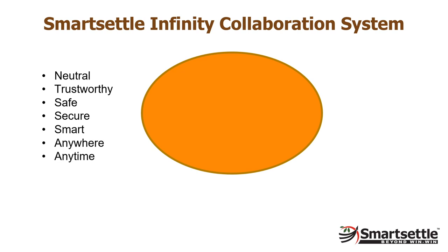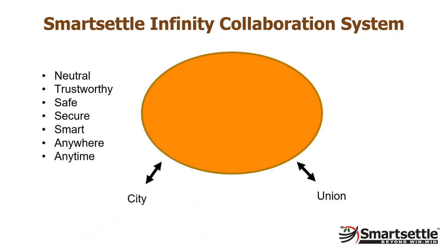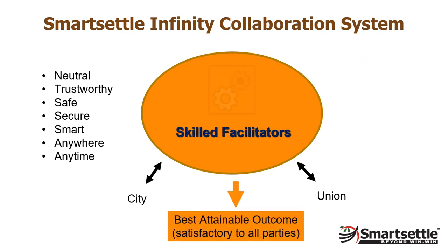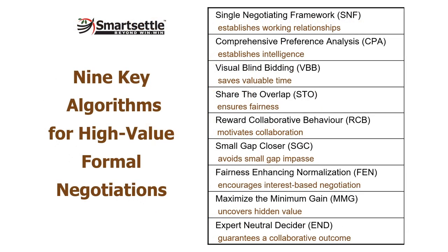The system can accommodate any number of parties, but this example will show only two parties: the City of Metropolis and a union called METO. The parties can be trained to operate the system themselves, but skilled facilitators are often employed to ensure that Infinity delivers the best attainable outcome for all parties. At the core of the neutral site are nine key algorithms designed around an optimization process that fosters collaboration while delivering a better outcome in a shorter time.